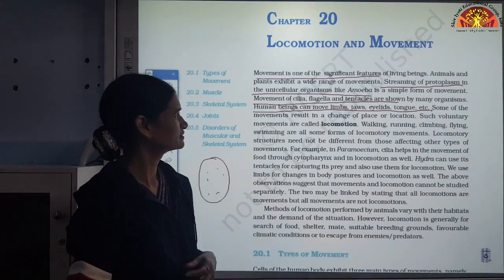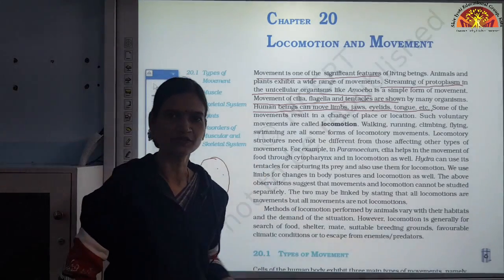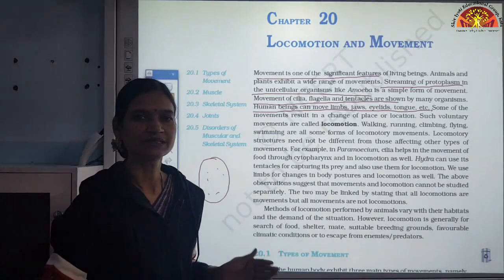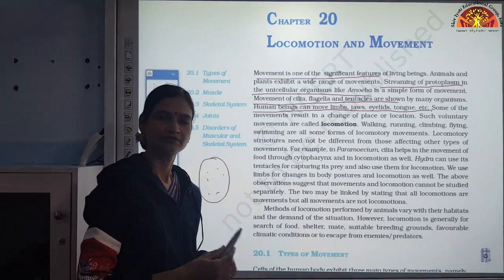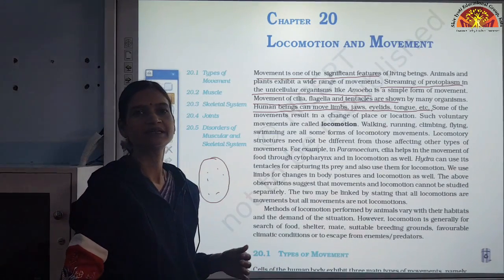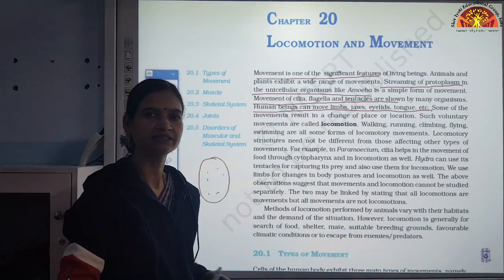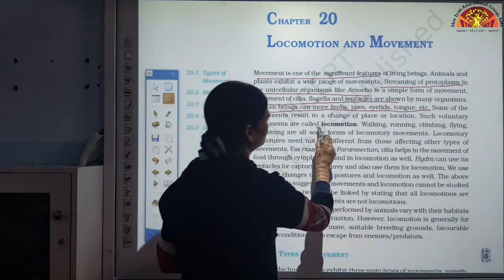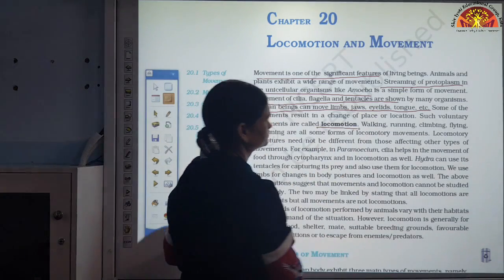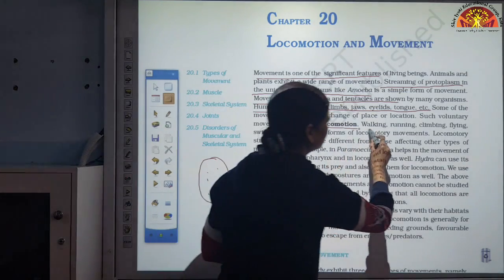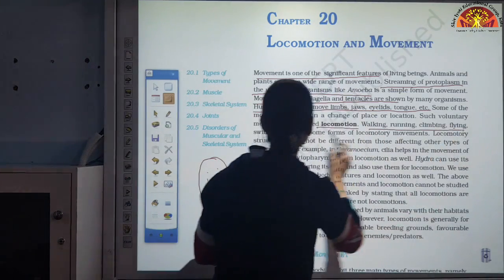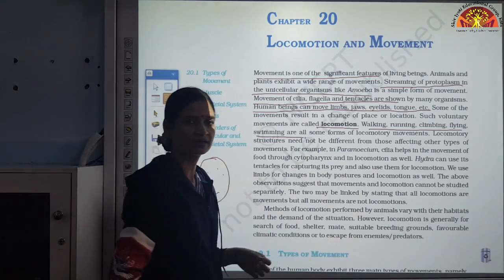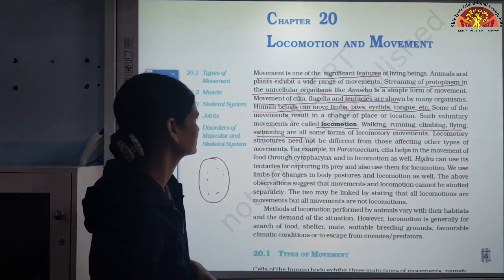Some movements result in a change of place or location. When movement helps in changing of place or location, then it is called locomotion — like walking, running, climbing, flying, swimming. All of these are locomotory movements.